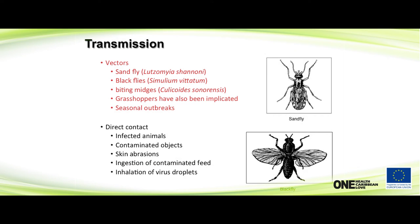The vectors thought to be involved in transmission include black flies, biting midges — the Culicoides midges that come out at night, called no-see-ums because you don't see them but they bite — and even grasshoppers have been implicated. Seasonal outbreaks occur because insects are seasonal. The virus can also be passed by direct contact with infected animals, contaminated objects, skin abrasions, ingestion of contaminated feed, and inhalation of virus droplets.